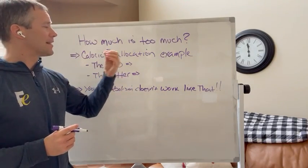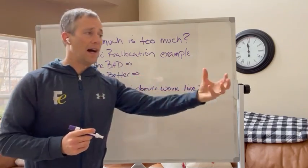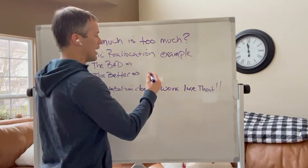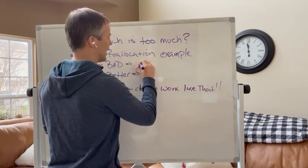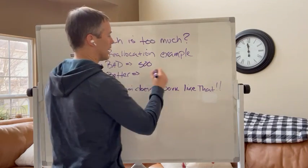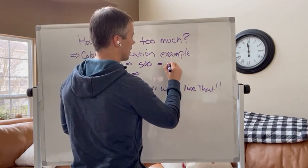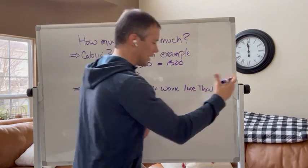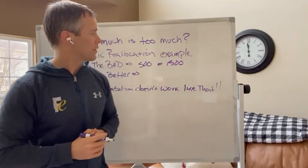An example of a way I would not reallocate is if I have a dinner party and eat 500 calories earlier in the day, and then that leaves me 1,500, assuming that my caloric deficit is 2,000 calories.